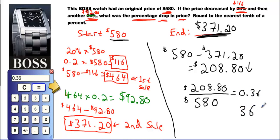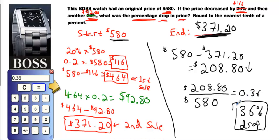So the actual drop is 36%. Stores separate the discounts into two 20% sales rather than advertising 36% off because most people just add them in their heads and assume it's a 40% sale — which makes the deal sound better than it really is. They're taking advantage of the fact that most people can't calculate this correctly.